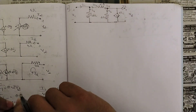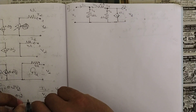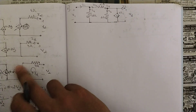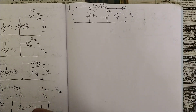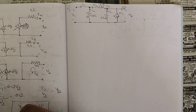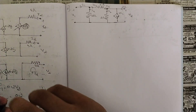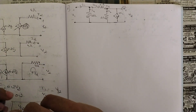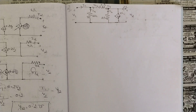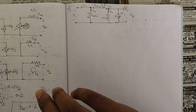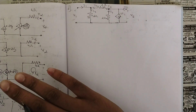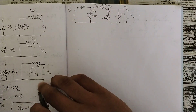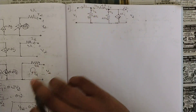Hello everyone, welcome to this new video. In the previous videos we left off with problems related to Y-parameters. We solved one problem and understood how to reduce the circuit using the conditions V2 equal to 0 and V1 equal to 0, splitting the network into two parts and solving separately to get the Y-parameters. Those who have not seen those videos, please see that video — it is available in a playlist.